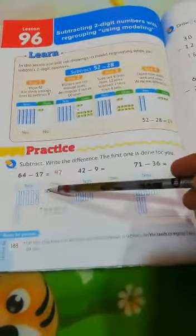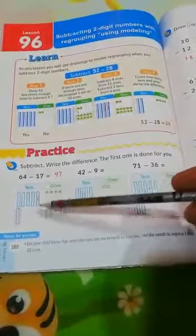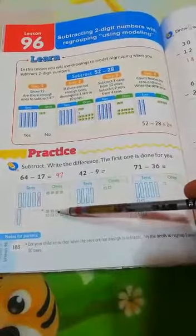I can subtract 7 from 14. Let's cancel 7: 1, 2, 3, 4, 5, 6, 7.